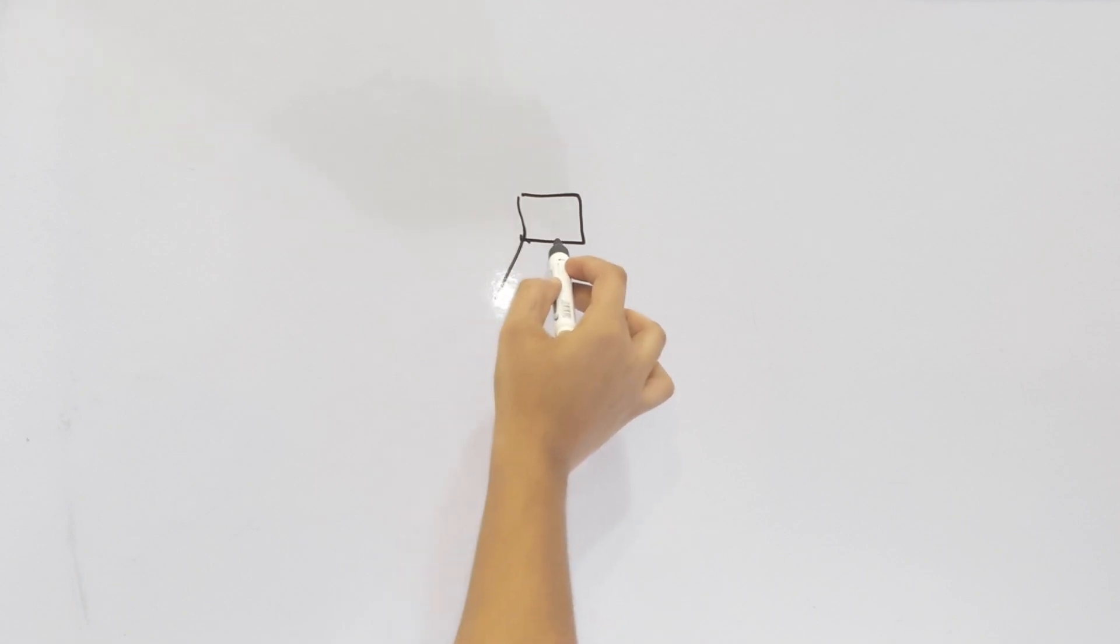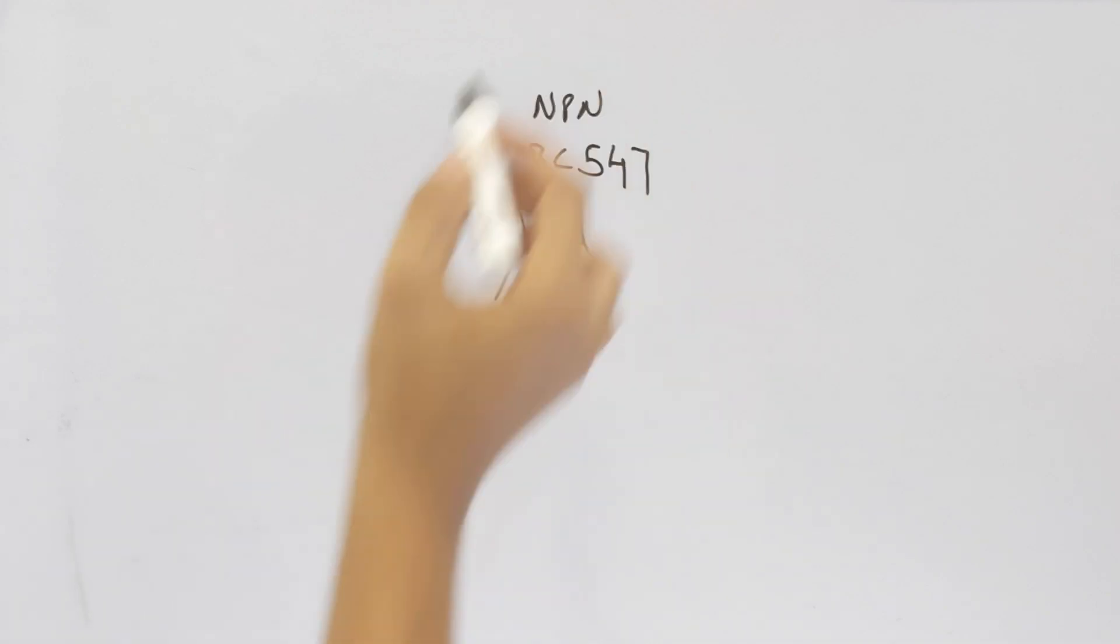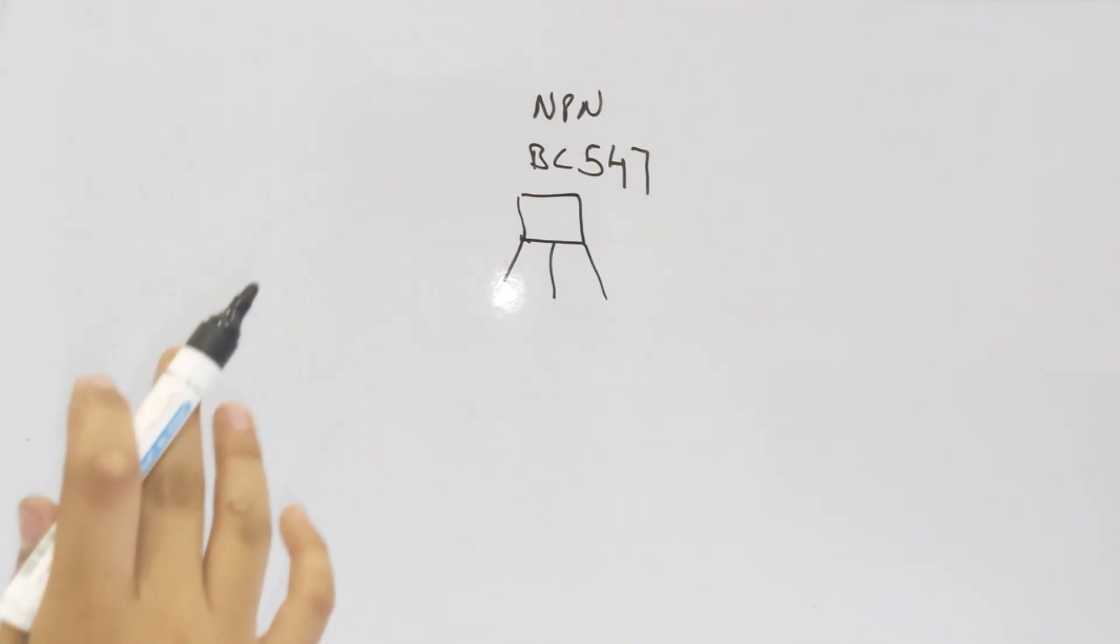The transistor is number BC547, which is an NPN transistor. The first pin of the transistor is collector, second pin is base, and third pin is emitter.